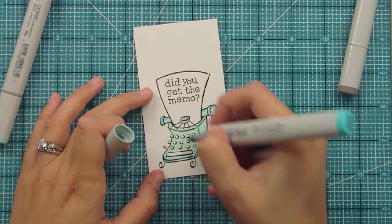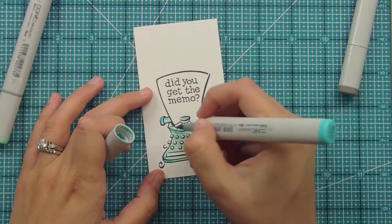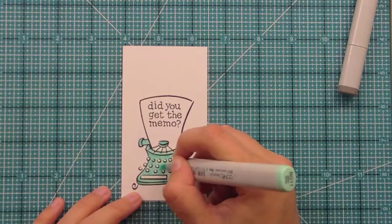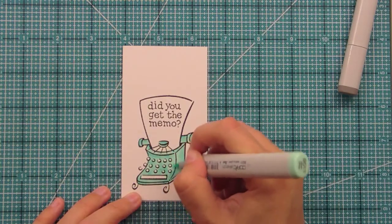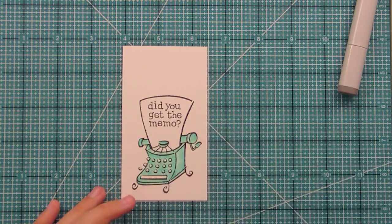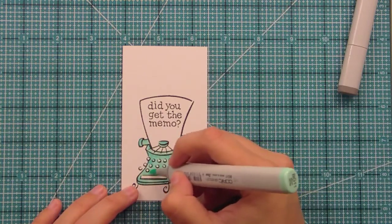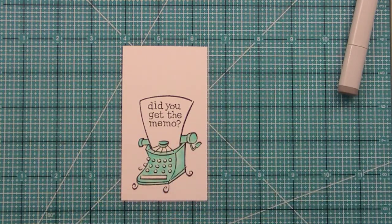So I'm just highlighting some of the edges with a darker color. And then I'm going to go in and blend it back with the lighter color. And I'm just kind of adding that color in. And I really just like this color for typewriter because it looks really vintage to me.